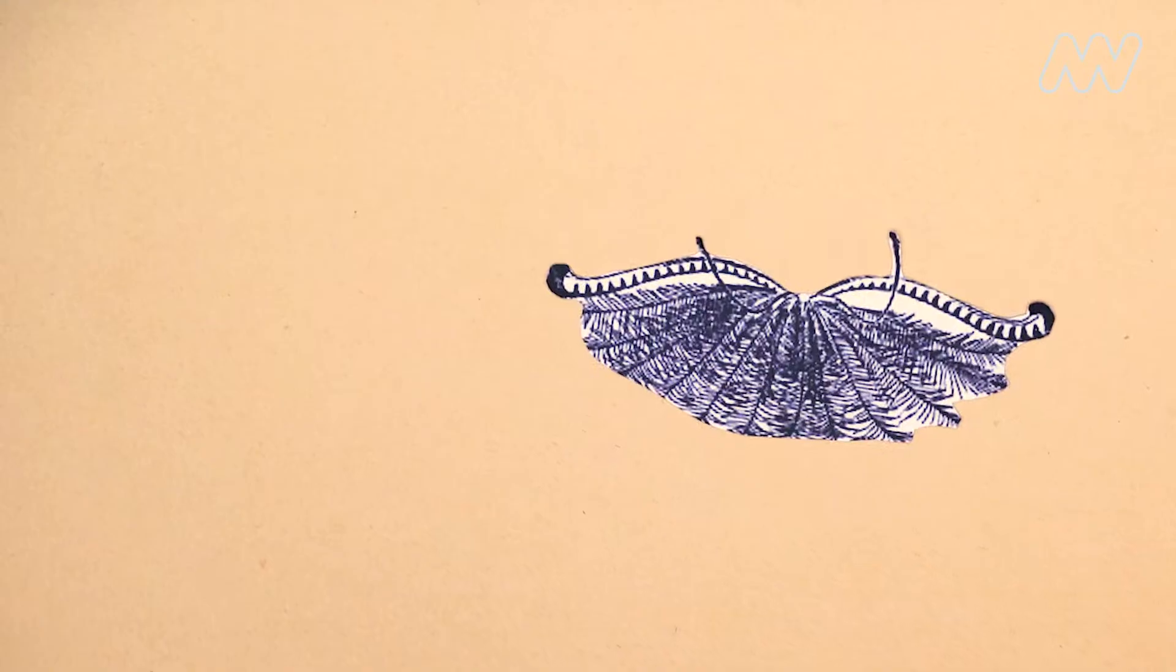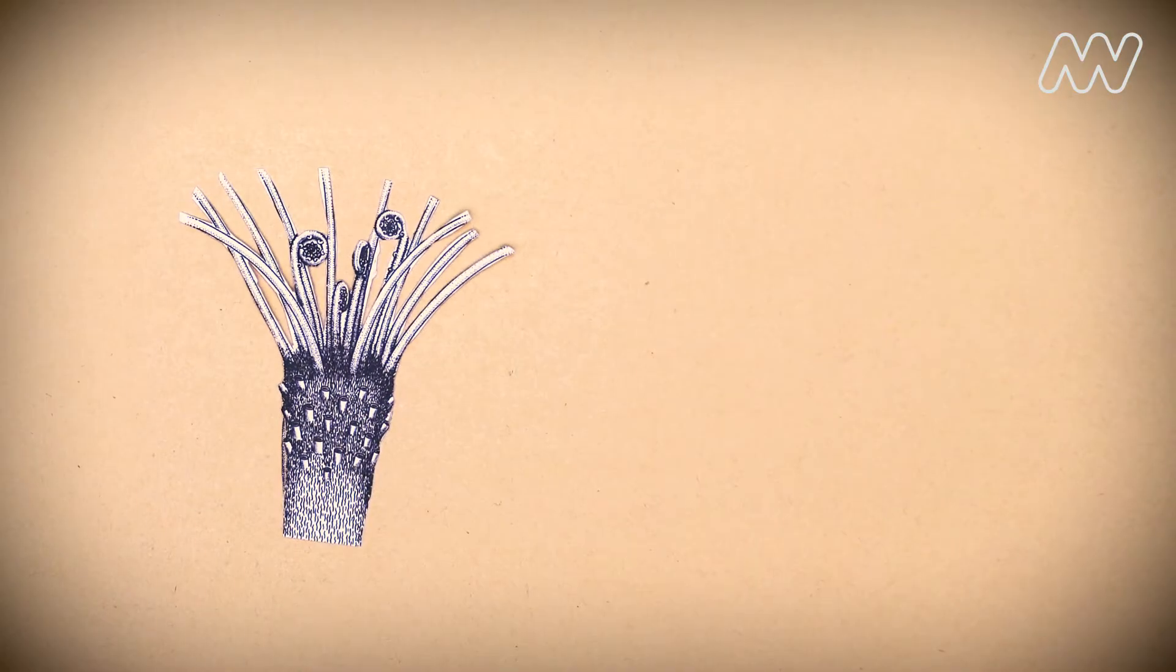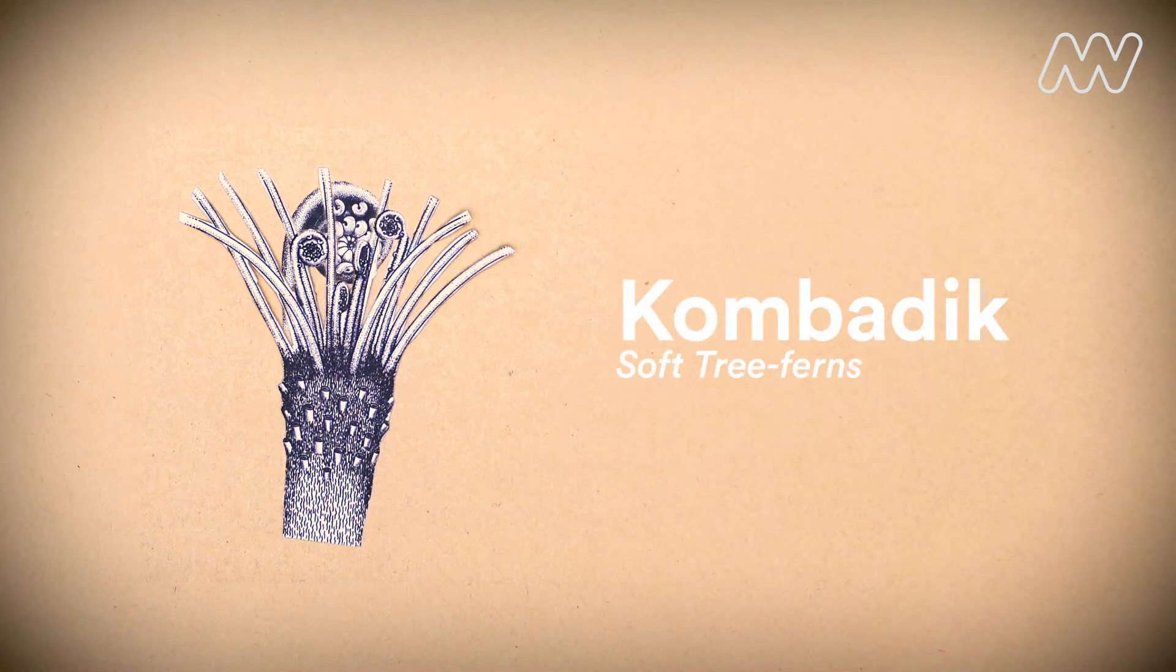The Bullen Bullen prefers the wet forest, where the males perform their courtship displays. Soft tree ferns are a major food source when no fruit can be found.